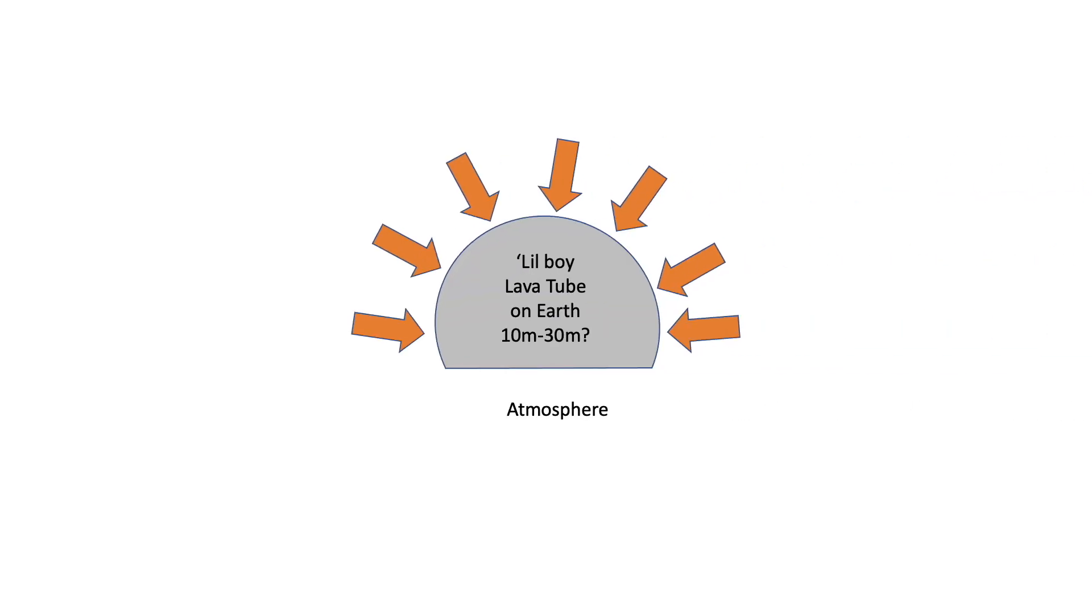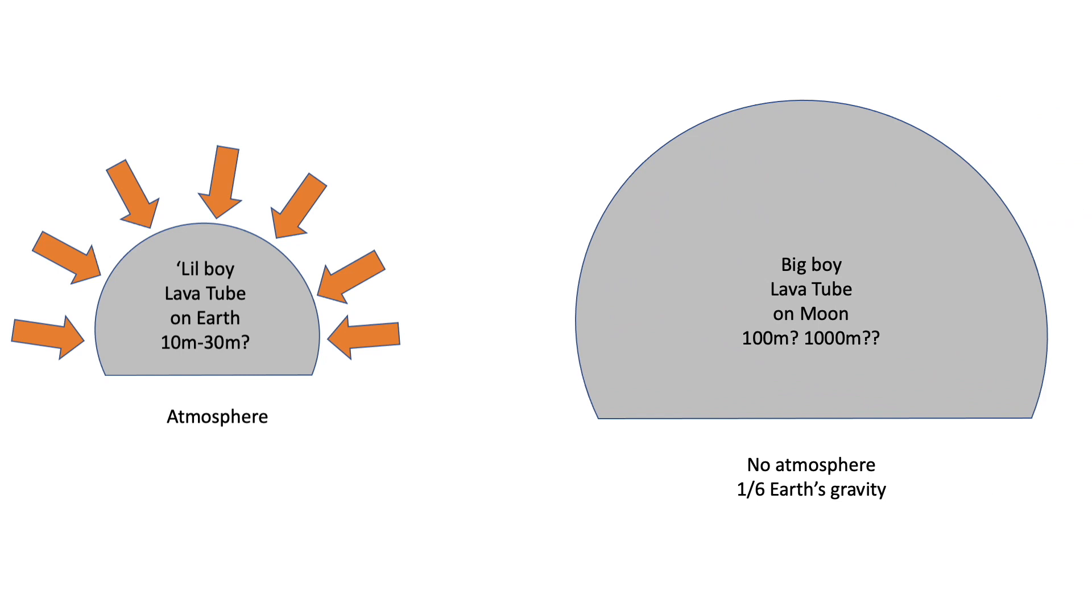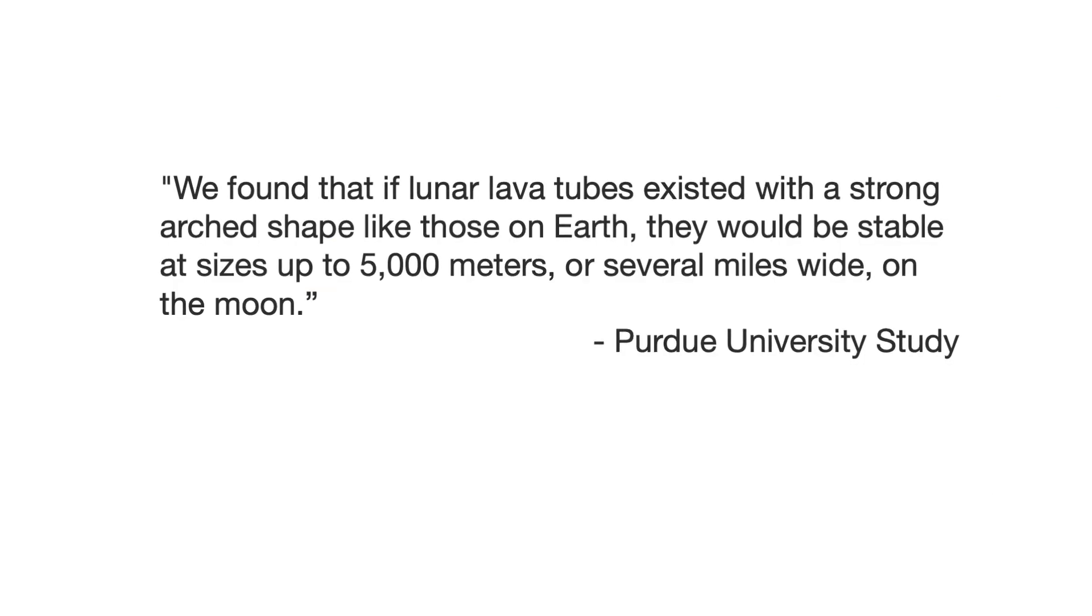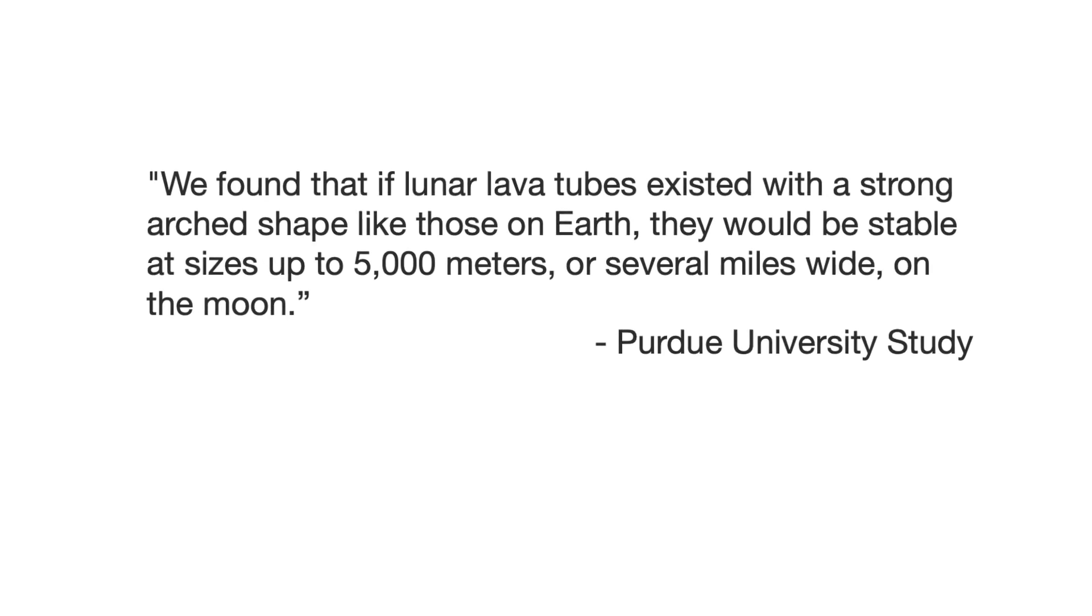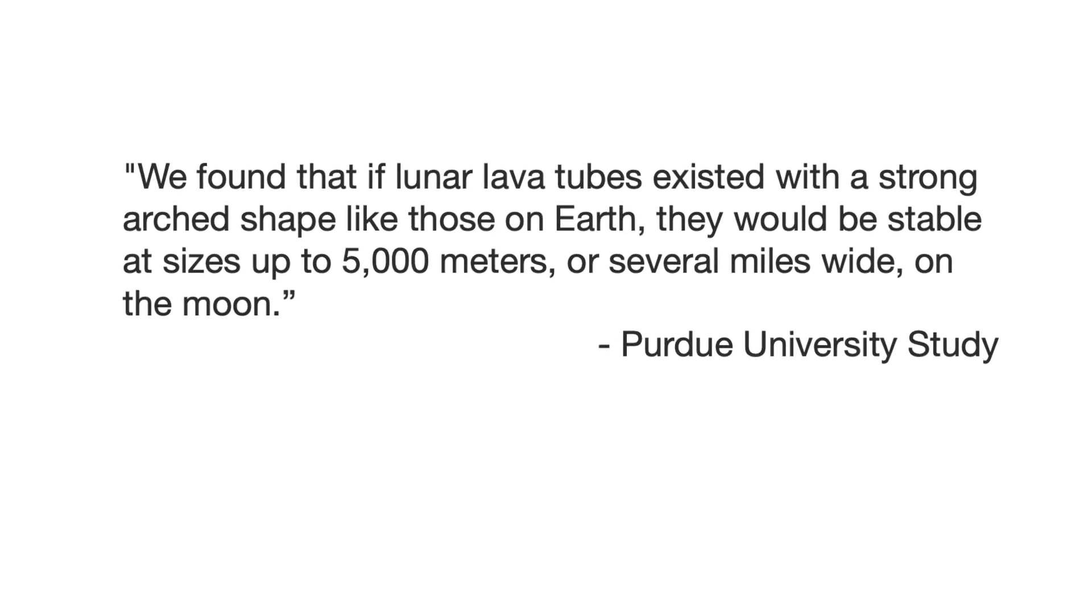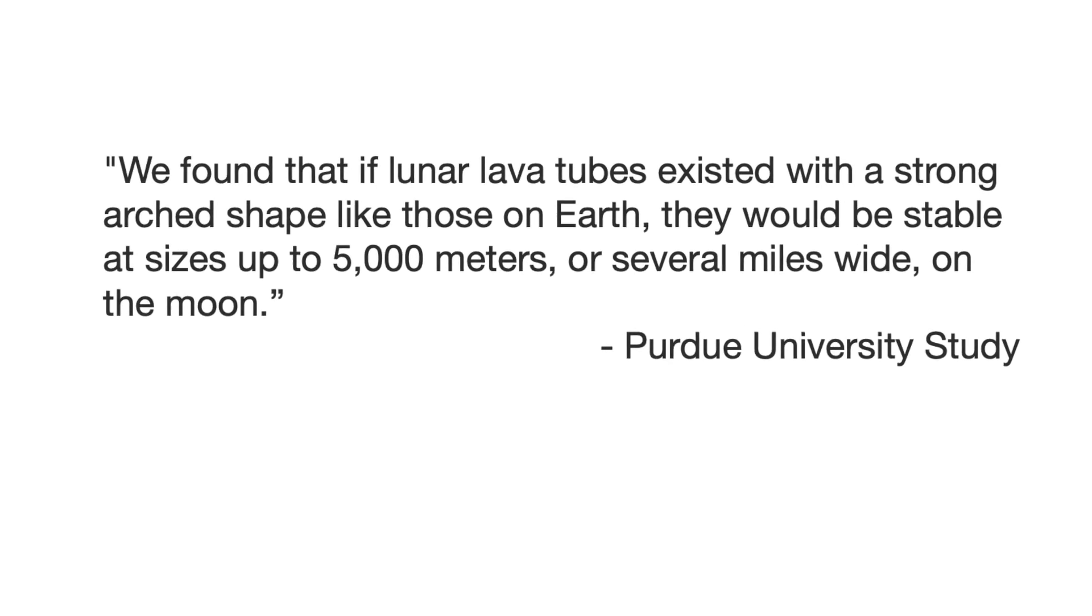Just how big can lunar lava tubes get? Gravity and an atmosphere play a key role in the size of lava tubes. Here on Earth, our atmosphere pushes down and in on everything with a force of 14.7 pounds per square inch. And gravity pulls everything down, including lava. Lava tubes on Earth only grow to 10 to 30 meters in diameter. If that sounds like a lot of space, consider the possibilities on the Moon. The Moon has one-sixth the gravity of Earth and, like we said, has no atmosphere. In a study by Purdue University, they found that if lunar lava tubes existed with a strong arched shape like those on Earth, they would be stable at sizes up to 5,000 meters or several miles wide on the Moon.